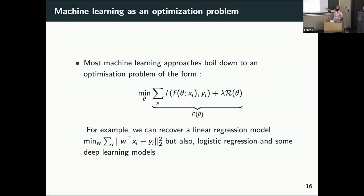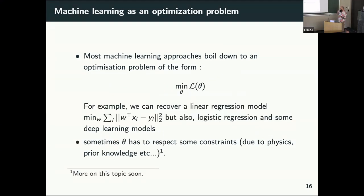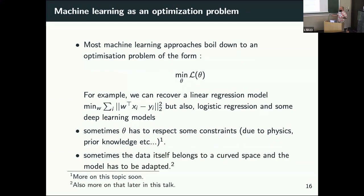When we model machine learning as an optimization problem, sometimes theta also has to respect some constraints. For example, sometimes we have some prior knowledge or knowledge from physics that we want to enforce on theta — so theta is not free in its space; it's constrained to some particular subspace. Also, sometimes the data itself is not in a flat Euclidean R^p space; sometimes it belongs to a curved space. If we have information on that, maybe we could use it to improve our model.